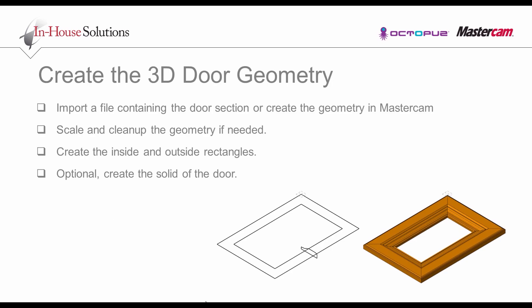Create the 3D door geometry. The geometry may be in DXF, DWG or Mastercam format, and will typically be in the form of a 3D wireframe or solid model. You should start with a DXF file or Mastercam file with the largest number of operations. This file should contain all of the operations you need for all the other files in the job. If the door section is imported, you might need to scale it and clean it up to be a closed chain. You will also need to create two rectangles using the toolpaths to machine the inside profile and the outside profile. The top of the panel should be constructed at Z0.